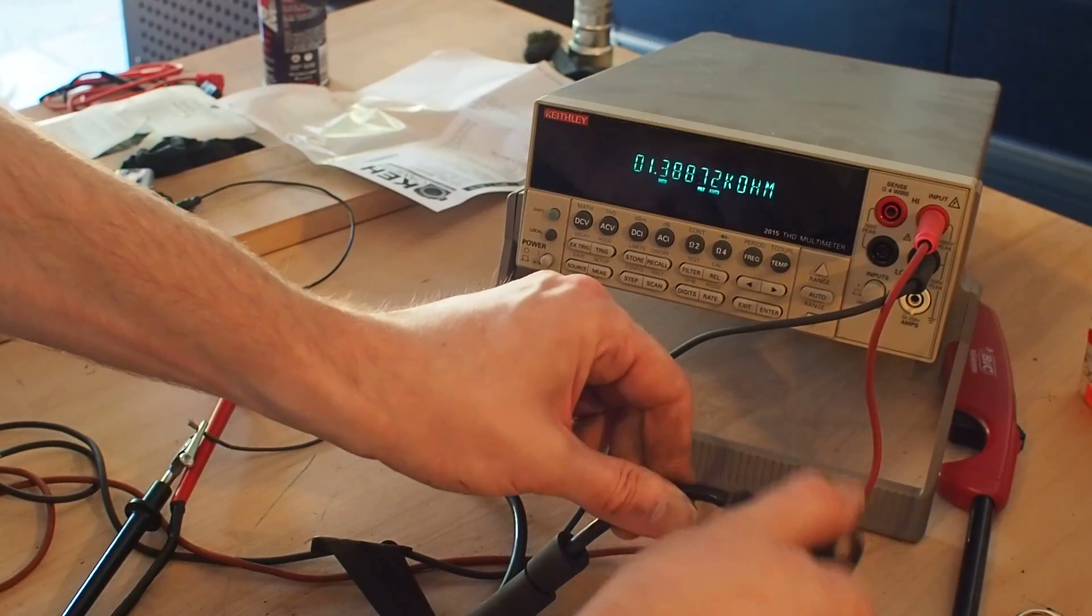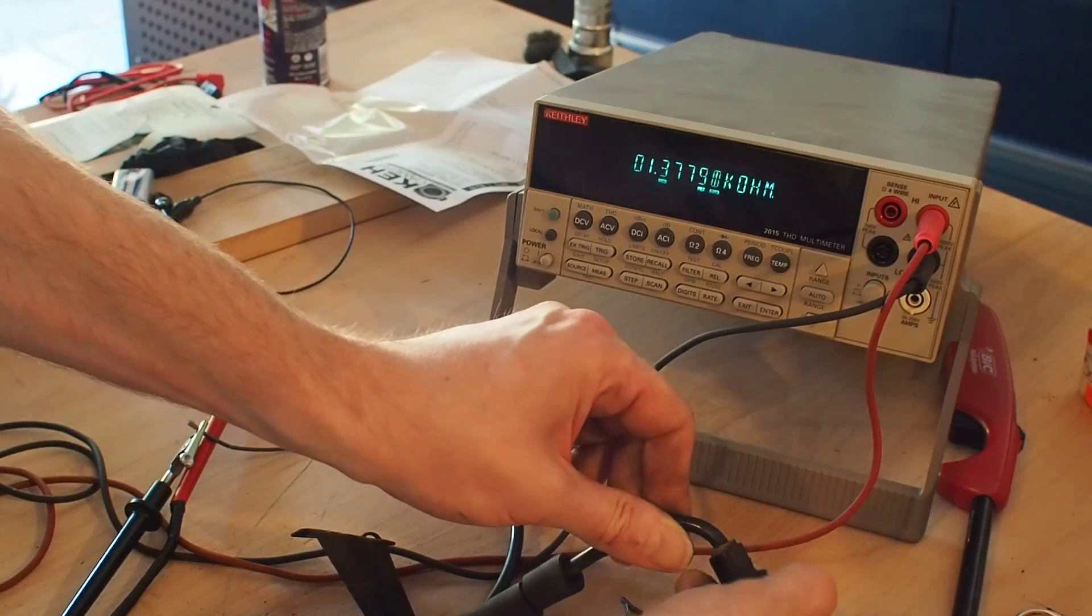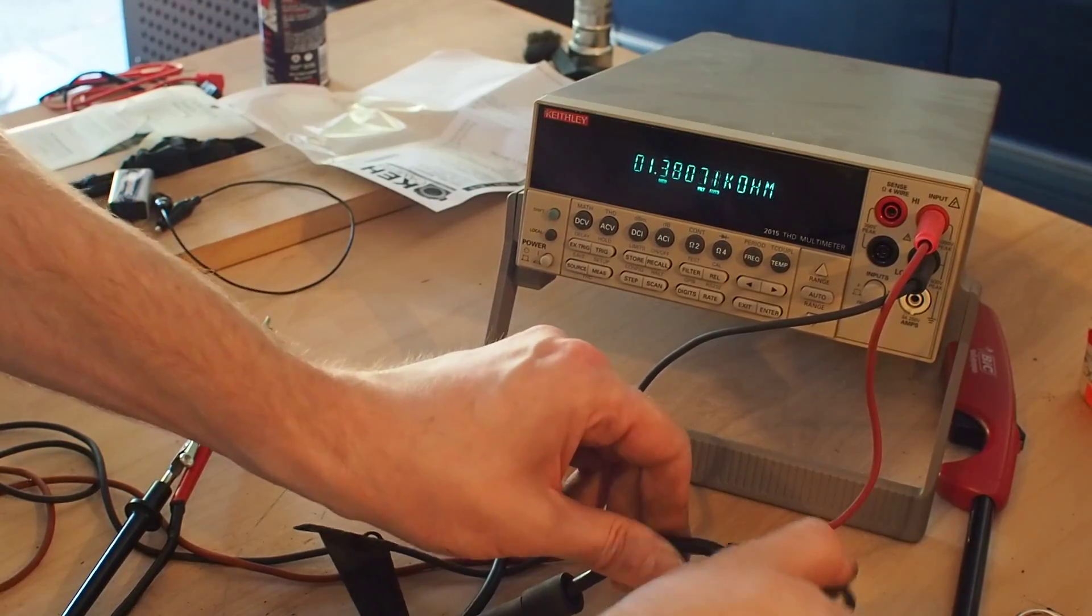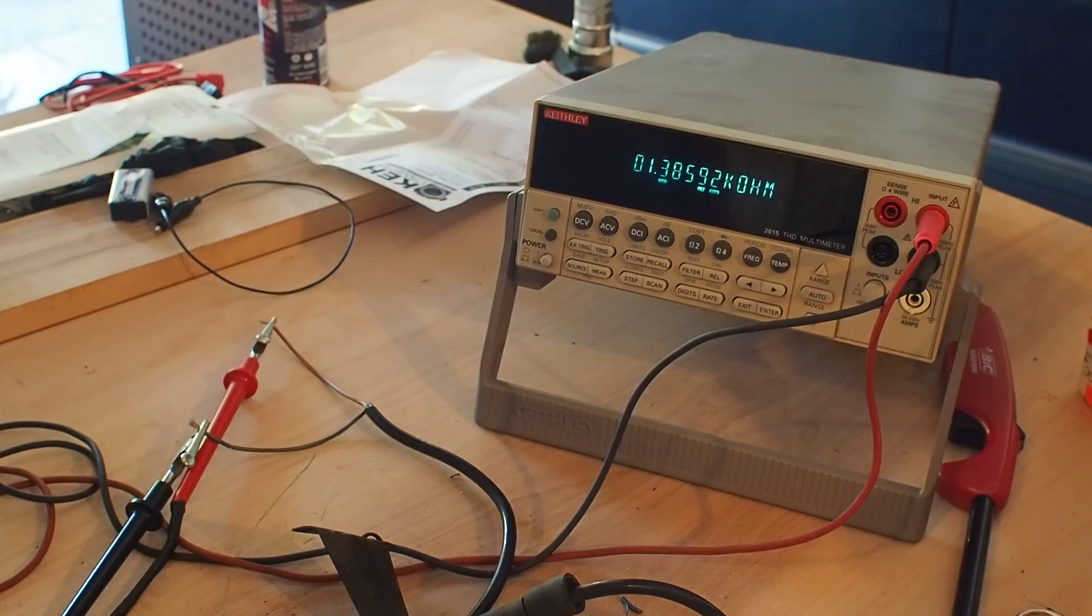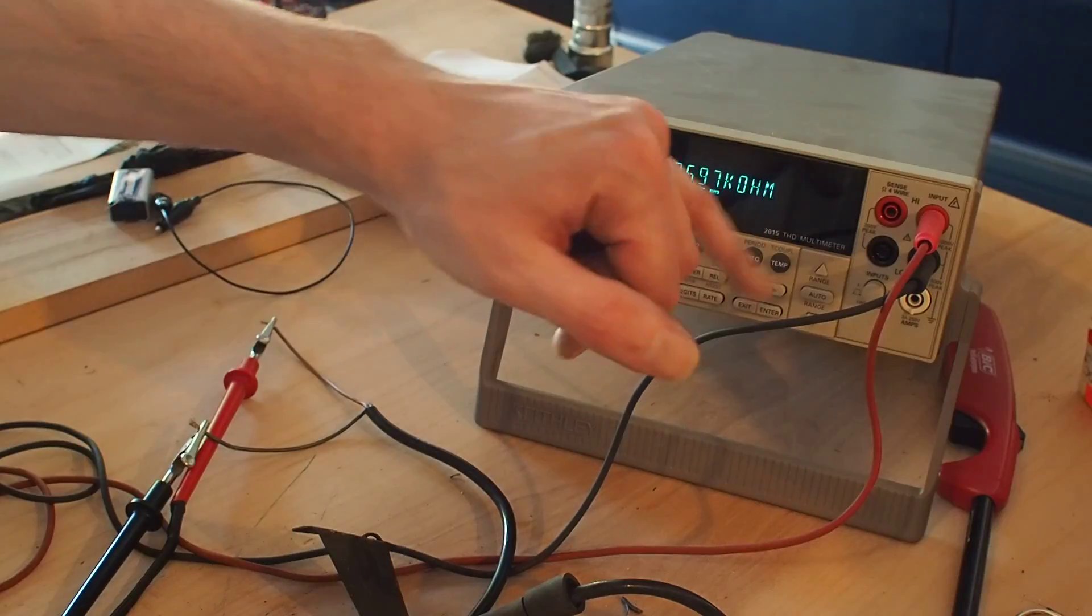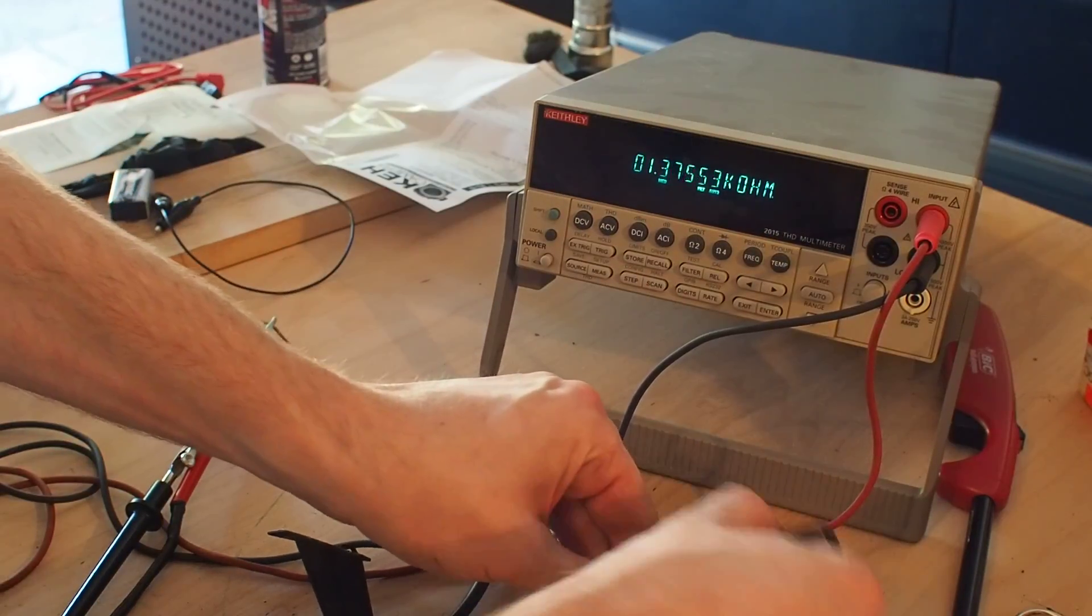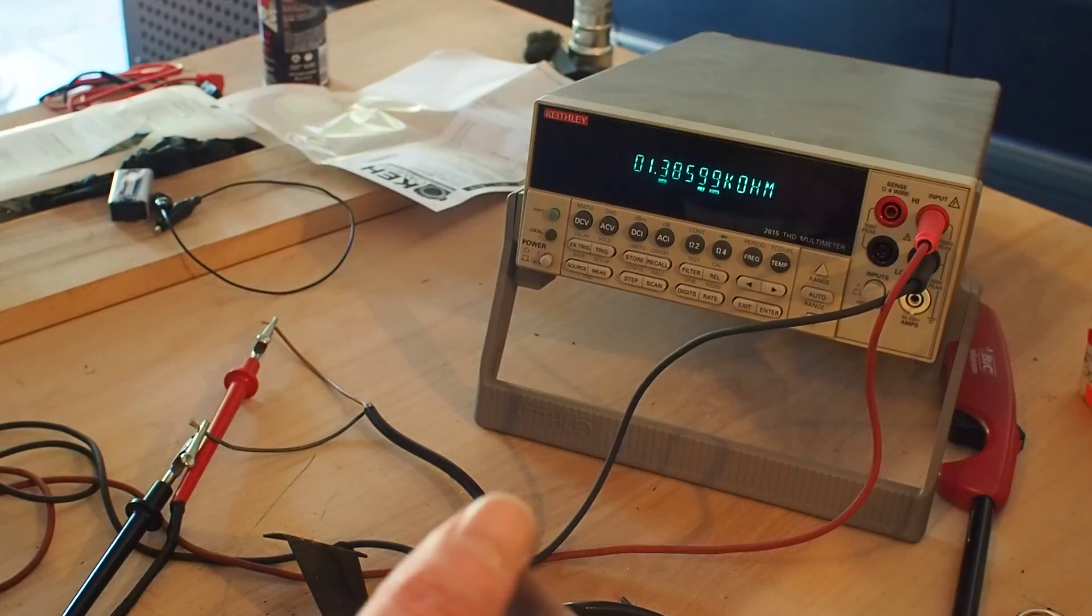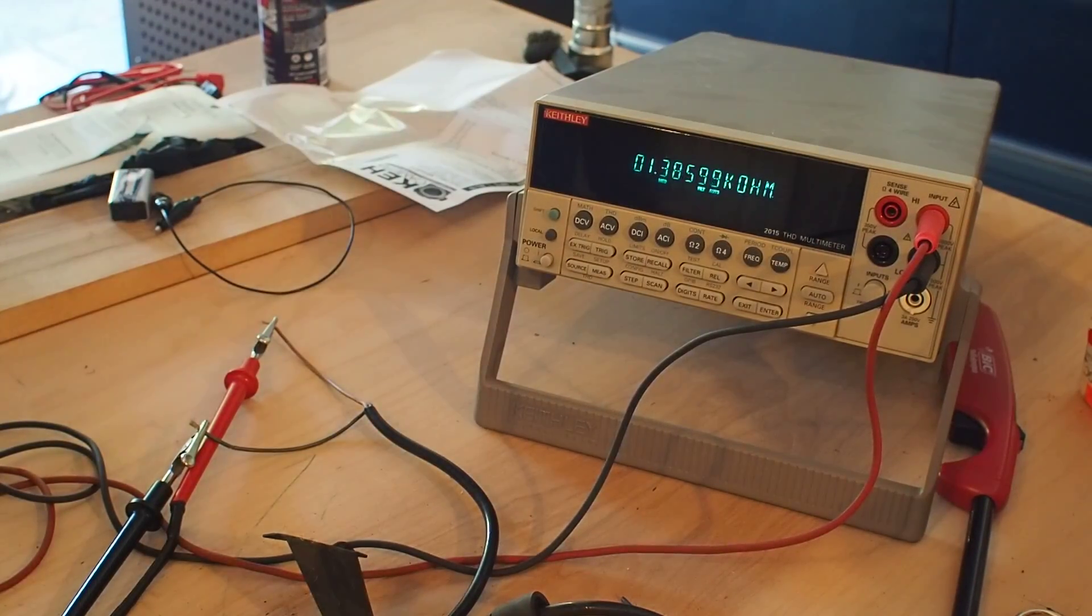You start driving it around and look what happens to the resistance. It starts going all over the place as soon as you start moving it. Anyway, and this meter is showing us out to six decimal places. There you go. It's the wire.